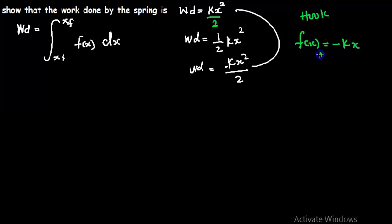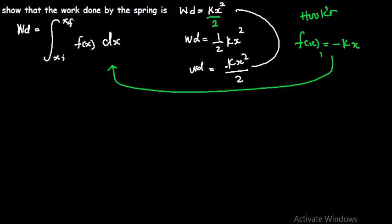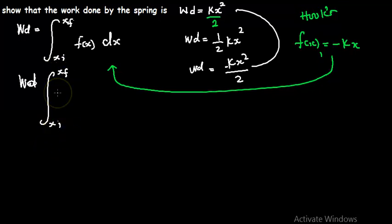The next thing we need to do is to substitute this equation — that is Hooke's law — into the work formula. The function f of x is equal to negative kx, so we are going to replace f of x with negative kx. Our work done is going to be the integral from x of i to x of f of negative kx, dx.